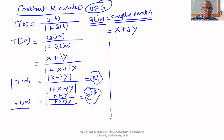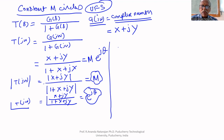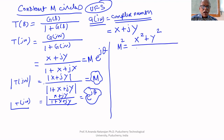So T(jω) can be written as magnitude M with angle e^(jθ), where M is the magnitude. Now M equals the square root of (X² + Y²) upon the square root of (1 + X)² + Y². Therefore M² equals (X² + Y²) upon ((1 + X)² + Y²).